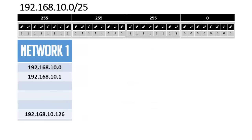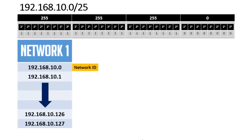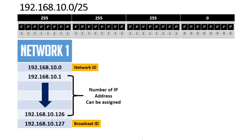In network 1, the IP addresses start from 192.168.10.0 and end at 192.168.10.127, which is 128 addresses. The first IP address (192.168.10.0) is the network ID and the last (192.168.10.127) is the broadcast ID. The usable host IP addresses are from 192.168.10.1 to 192.168.10.126.